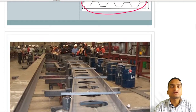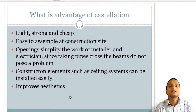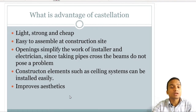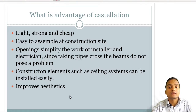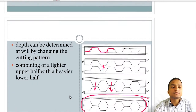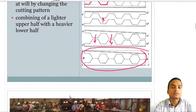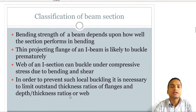Castellation has many advantages: the beams are light, strong, and cheap, and easy to assemble because openings are already provided. All electrical and plumbing ducts can be easily passed through these holes. They also improve aesthetics. The depth can be determined at will by changing the cutting pattern. This is one option alongside other beam types.